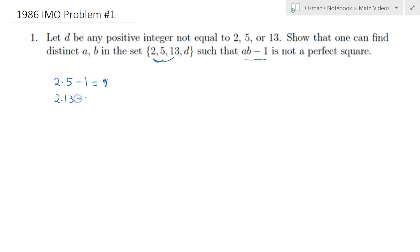2 times 13 is 26 minus 1 is 25, again a perfect square. And finally 5 and 13: 5 times 13 is 65 minus 1 is 64. So all three of these combinations gave me a perfect square.